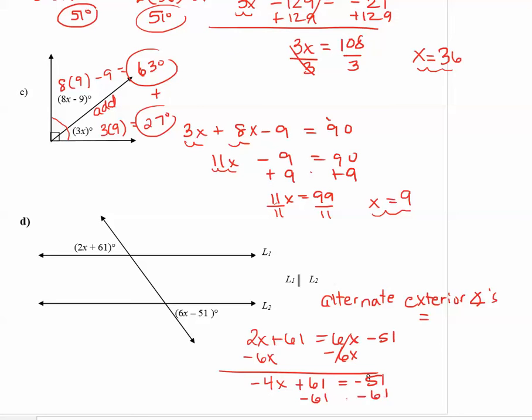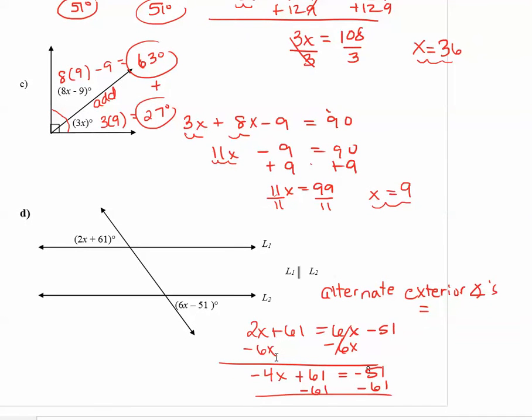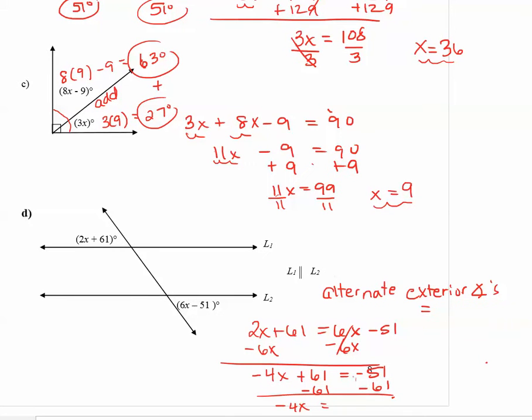Now let's subtract 61 from both sides. So negative 4x is equal to negative 51 minus 61 and that's equal to negative 112. Lastly, we're going to divide both sides by the x number negative 4. So we get negative 112 divided by negative 4 and that's positive 28.